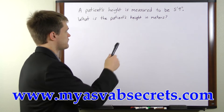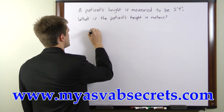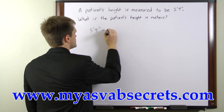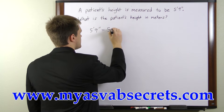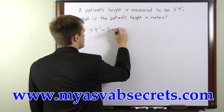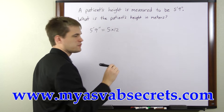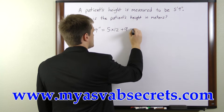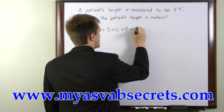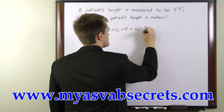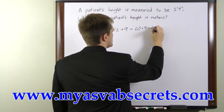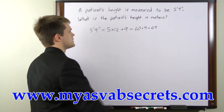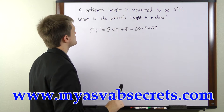So first we're going to take 5 feet and 9 inches. That is equivalent to 5 times 12 because there are 12 inches per foot, plus 9. That gives us 5 times 12 is 60, and 60 plus 9 is 69. So the patient is 69 inches in height.